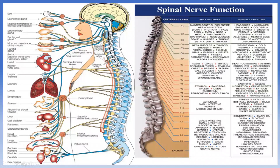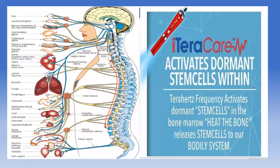The spine is very, very important because many organs are attached to it via spinal nerves. Each vertebral level controls a corresponding area of the body, with associated possible symptoms — that's why massaging the head area can relieve headaches. It's very important to treat the spine during your treatment. Also, using the iTeraCare activates stem cells in the bone marrow. When these stem cells get activated, they travel to the area that needs repair and start the repair process.